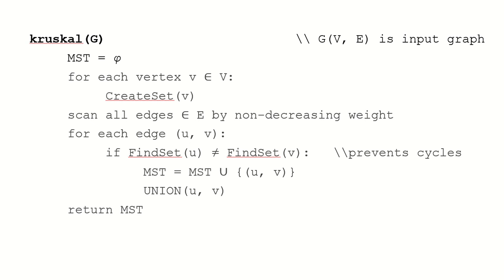Let's take a look at the pseudo code for this algorithm. Given a graph G with a set of vertices V and a set of edges E, initially our minimum spanning tree is null. For each vertex V in the set of vertices, we create a set for that vertex. This means we are going to create disjoint sets using these vertices, and initially all the sets will have one vertex each.